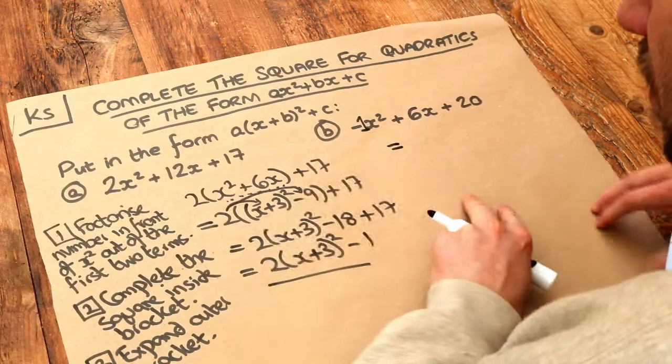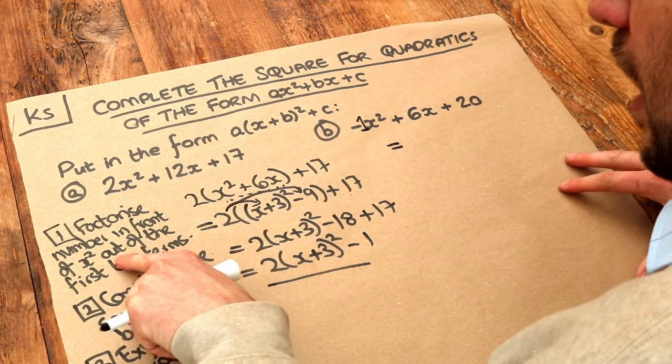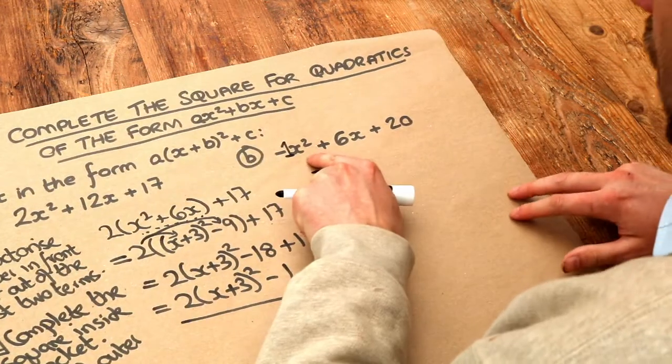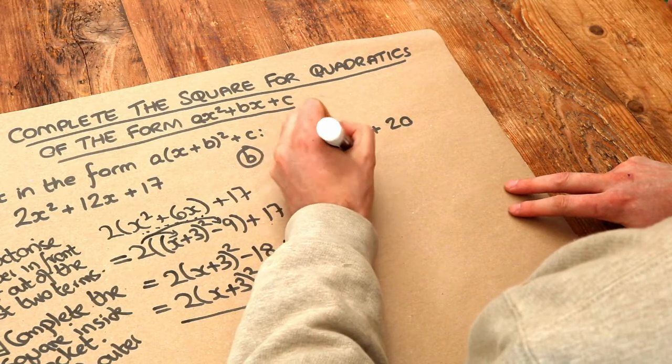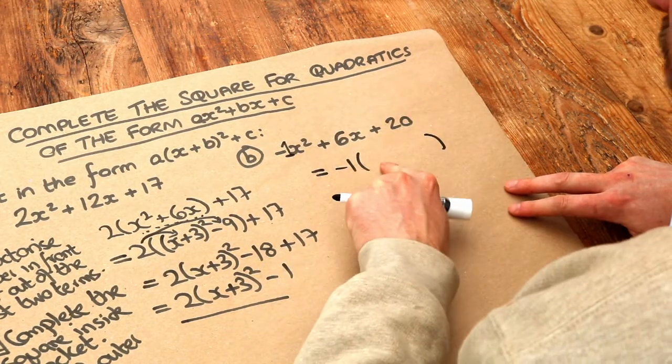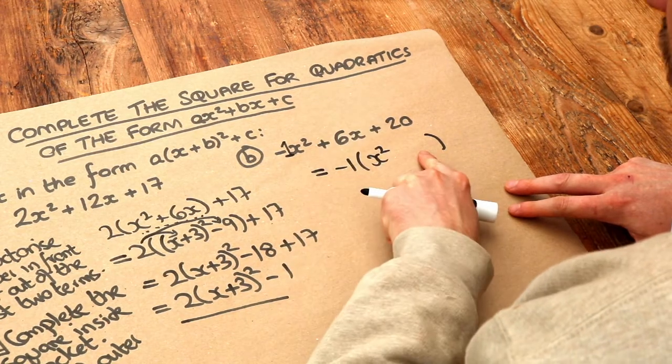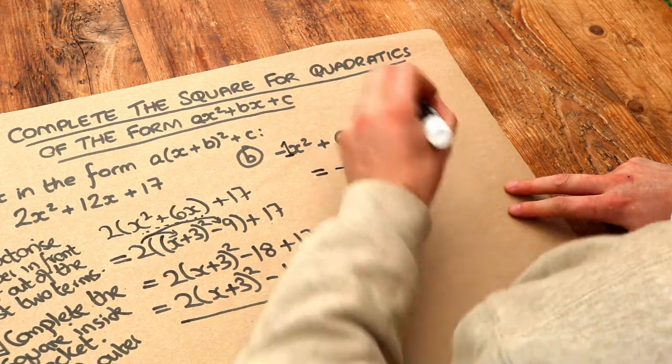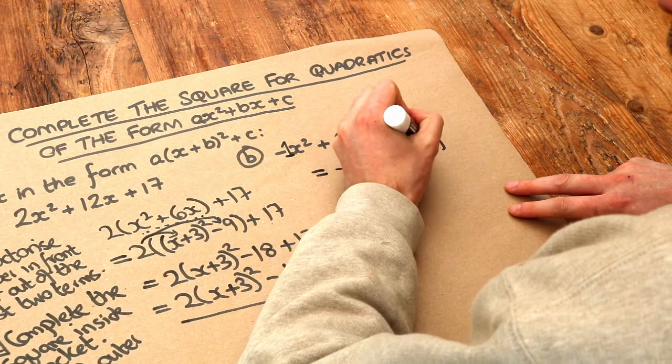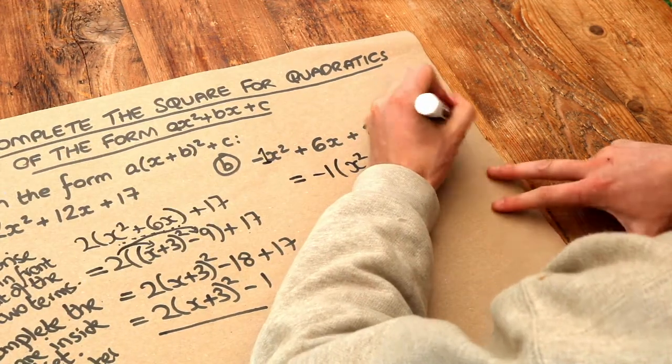So let's do exactly what we did before. Factorise the number in front of the x squared out of the first two terms. So the number in front of the x squared is minus 1. So we're going to factorise the minus 1 out. So minus 1 times what is minus 1x squared, which is just x squared. And minus 1 times what is positive 6x, which is minus 6x. And we've still got that plus 20 there, minding its own business.